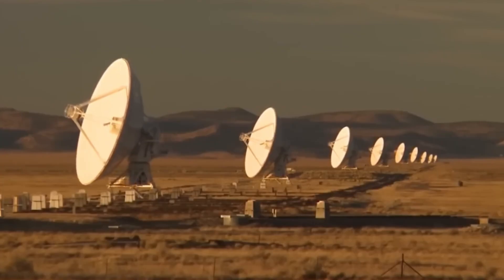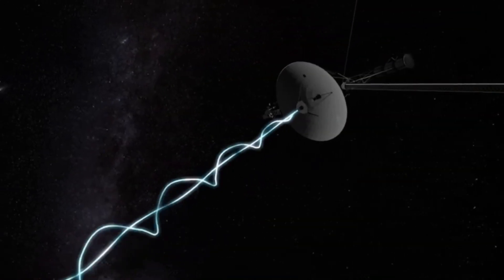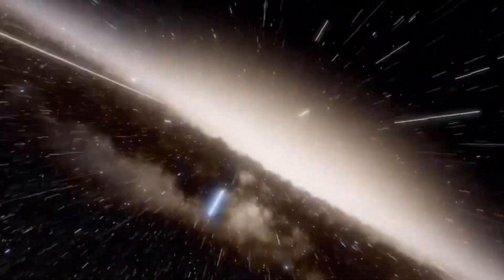After Saturn, the two spacecraft parted ways. Voyager 2 continued its grand tour, going on to explore Uranus and Neptune, while Voyager 1 took a different path, a journey that would eventually lead it beyond the solar system.